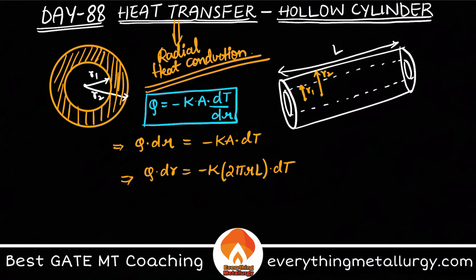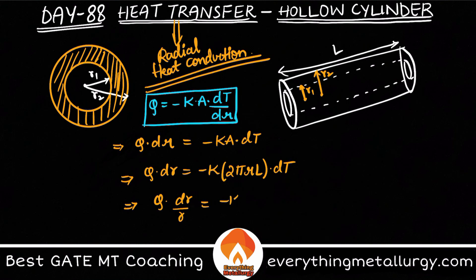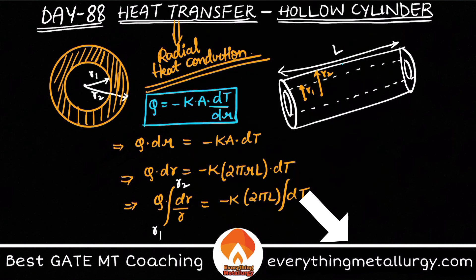Taking r to the other side gives Q·(dr/r) = −k·2πL·dT. Now we integrate: the limits for radius are from the inner radius r1 to the outer radius r2, since that is the solid thickness. For temperature, we go from T1 to T2.